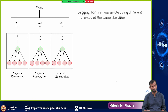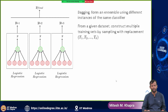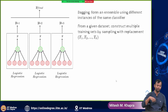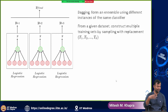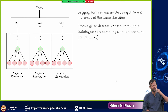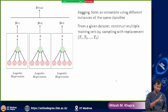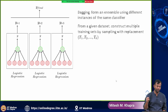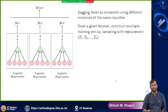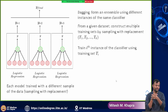This is called bagging — when you have an ensemble using different instances of the same classifier. For a given dataset, you construct multiple training sets by sampling with replacement. I have the original training set of a million points and I construct multiple training sets from it. I draw a sample of 200k for the first neural network. I do not throw that 200k away — I put it back and again draw a random 200k sample for the second neural network. Each model is trained on a different sample Ti.